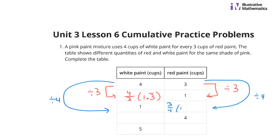Some of us want to write the decimal, which is 75 hundredths, and that's okay too. Now what about this next step? From 1 to 4. Let's take the 1 and multiply it by 4, which means we're going to take the 4 thirds and multiply that by 4 to get 16 thirds.